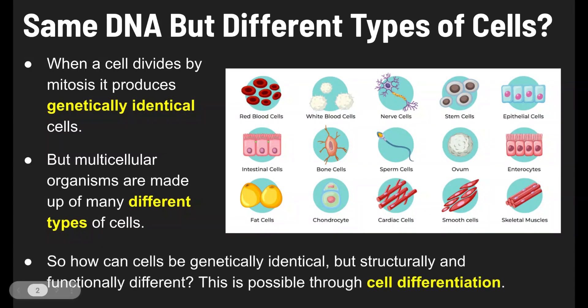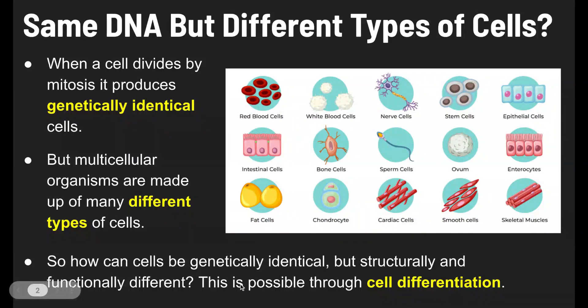So, here's the question. How can cells be genetically identical? All of the cells in this picture have exactly identical DNA, and yet they're structurally and functionally different. How can that be?